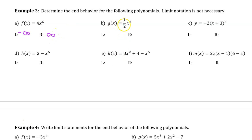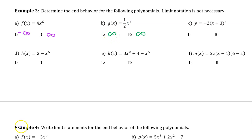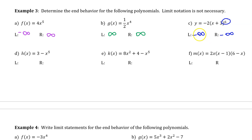For part b, the positive leading coefficient tells us that the right end behavior is approaching positive infinity. The even degree means the end behavior will be the same on the left, so it will also be approaching positive infinity. For part c, the negative leading coefficient tells us the right end behavior is approaching negative infinity. The even degree means the left end behavior will also be negative infinity.